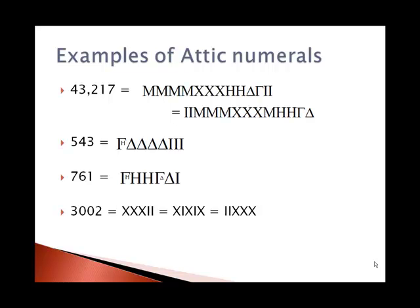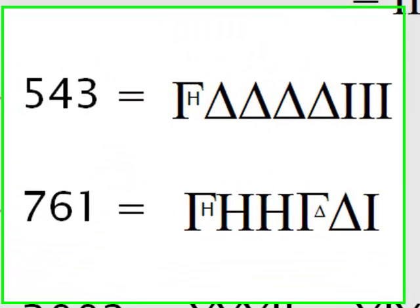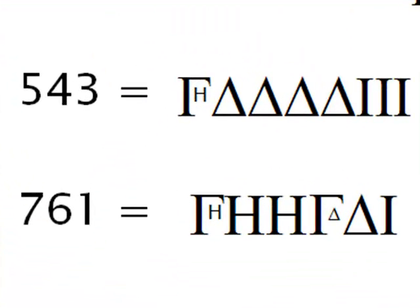An interesting thing that the Attic system did is for five of something, like 500, 50, 5000, 50,000, they took the gamma symbol, which meant five, and tucked inside of it the symbol for 10 or 100 or 1,000 or 10,000. So, for example, in 543, we have a gamma with an eta inside, which means 500, and then four deltas for the four 10s and three iotas for the three 1s. In 761, we have a 500, a gamma with an eta inside of it, and then two more etas for the other 200s. And then a gamma with a delta inside for 50, and then another delta to make it up to 60, and an iota.